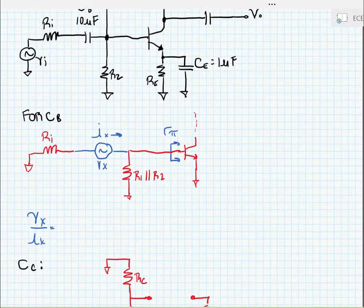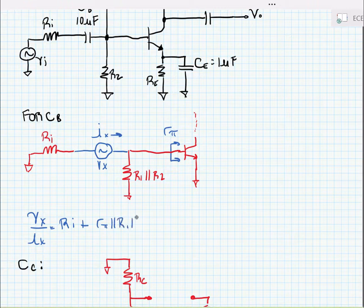And so if we find VX over IX, we're going to find that it's equal to RI plus R pi in parallel with R1 in parallel with R2. In other words, it's the series combination of the input resistance with all of the parallel resistance at the base of the transistor. This is equal to RCB, the driving point resistance seen by the CB capacitor.